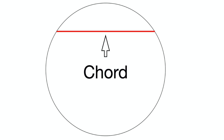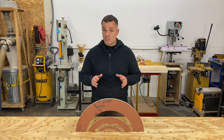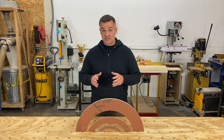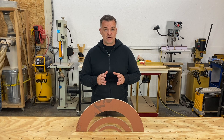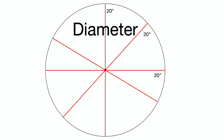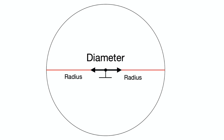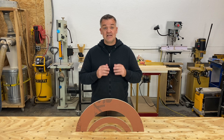A straight line from one surface to another surface in a circle is called a chord. Any straight line, whether big, small, or at any angle, is a chord. There is a special type of chord called the diameter — a straight line from one surface to another that crosses the middle of the circle. Just like the radius, it will always be the same length. Two radii equal the diameter.